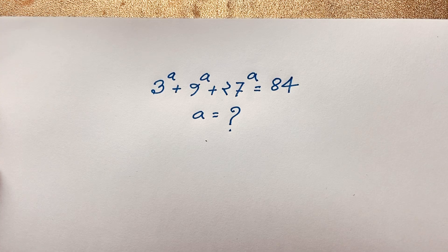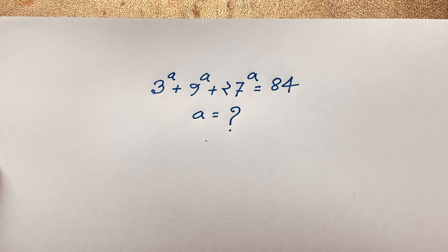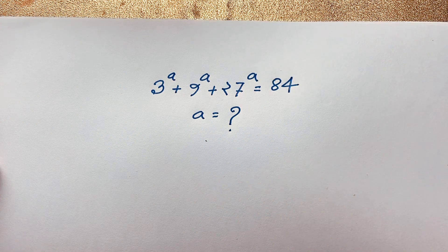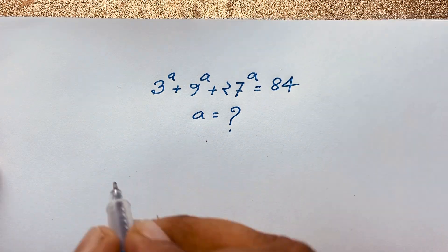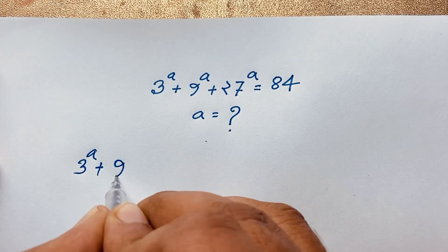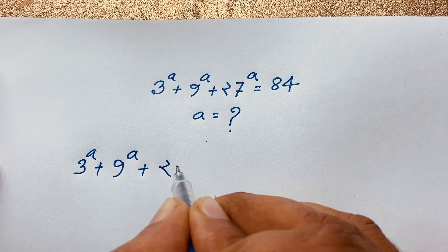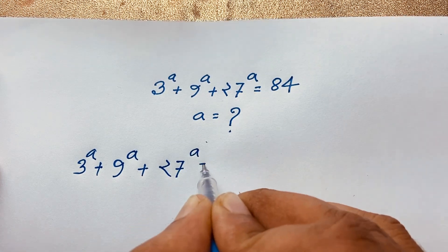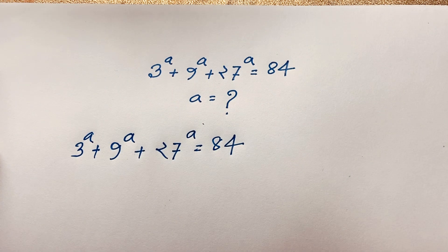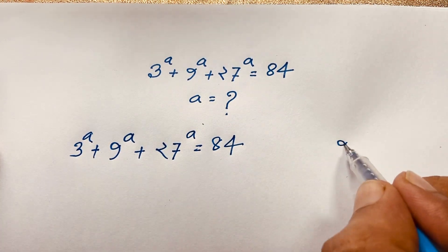Hello everyone. In this video we solve a nice exponential expression: 3 to the power a plus 9 to the power a plus 27 to the power a is equal to 84. We find out the value of a in this polynomial question.